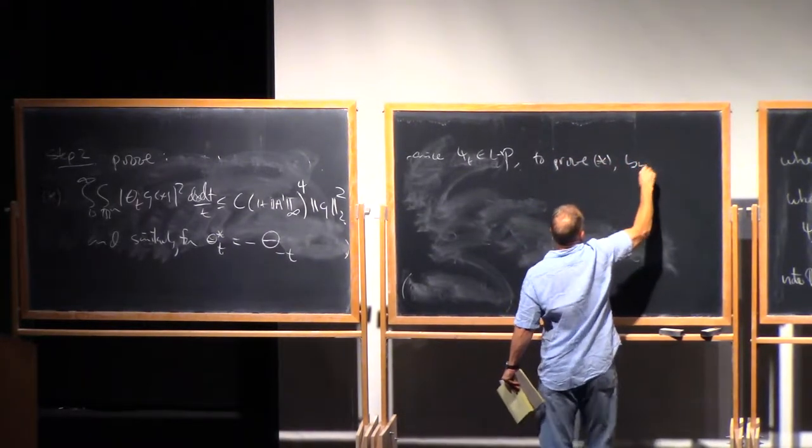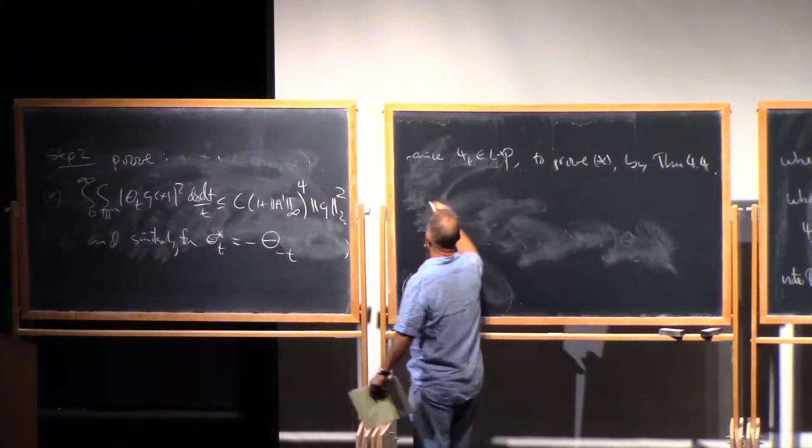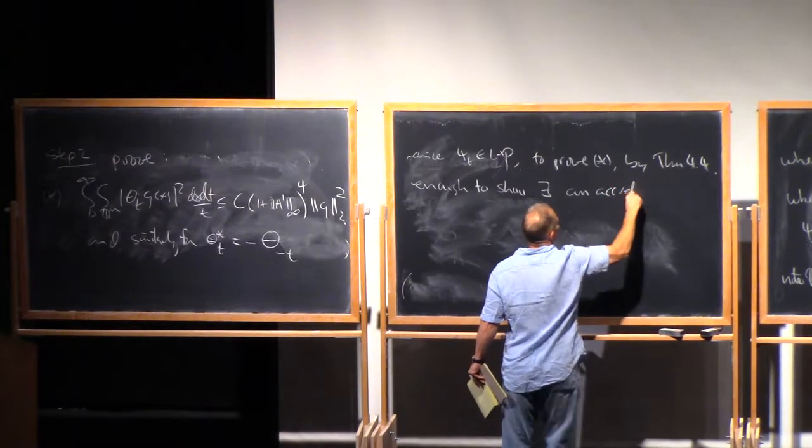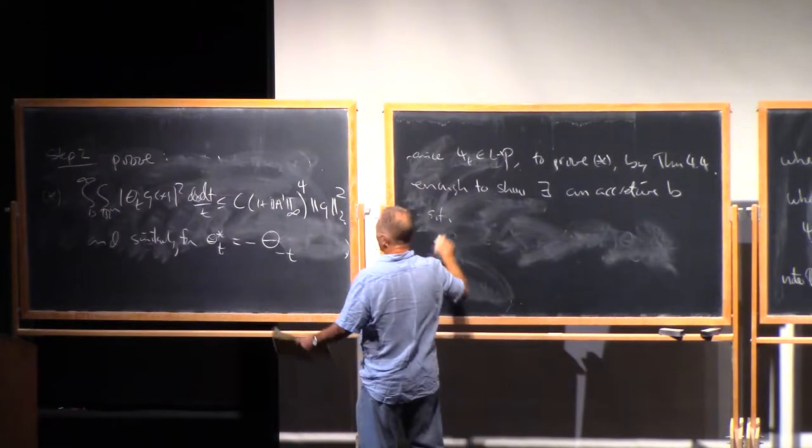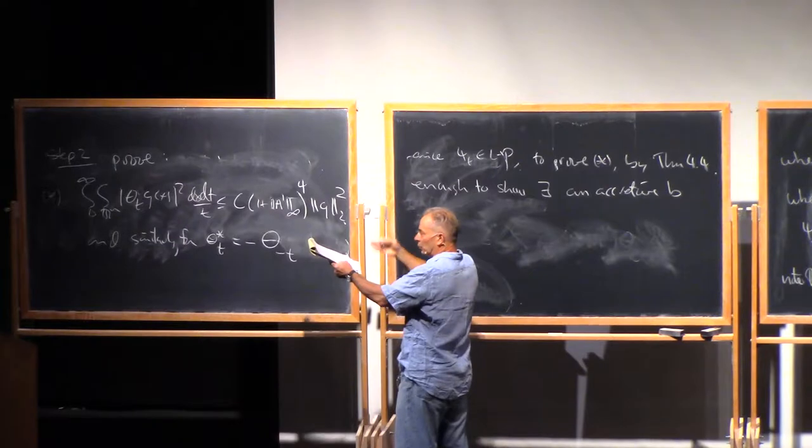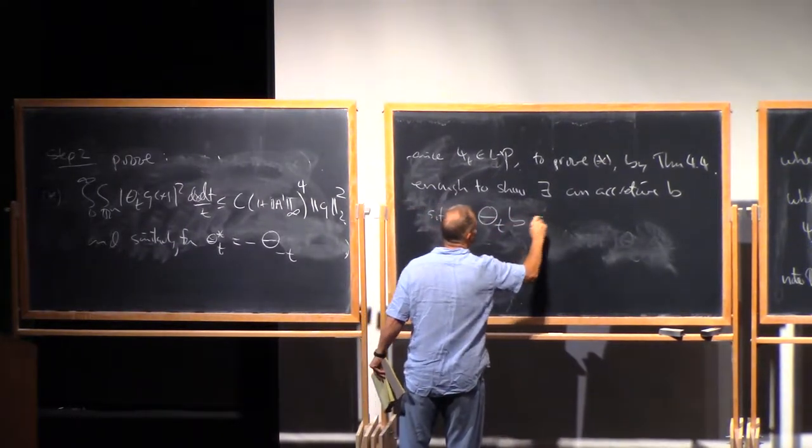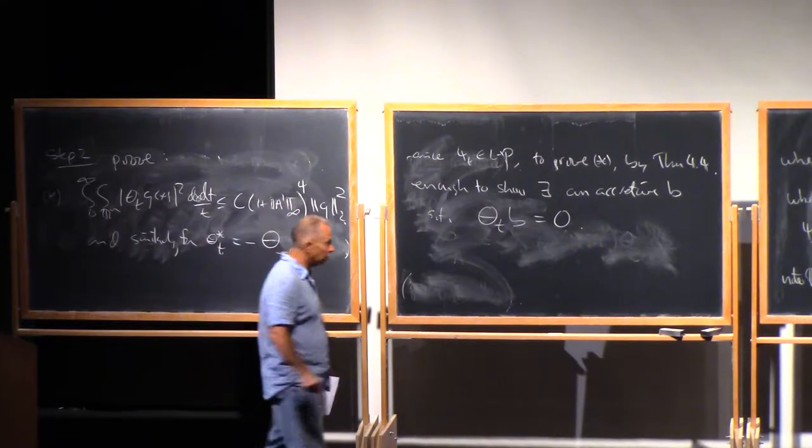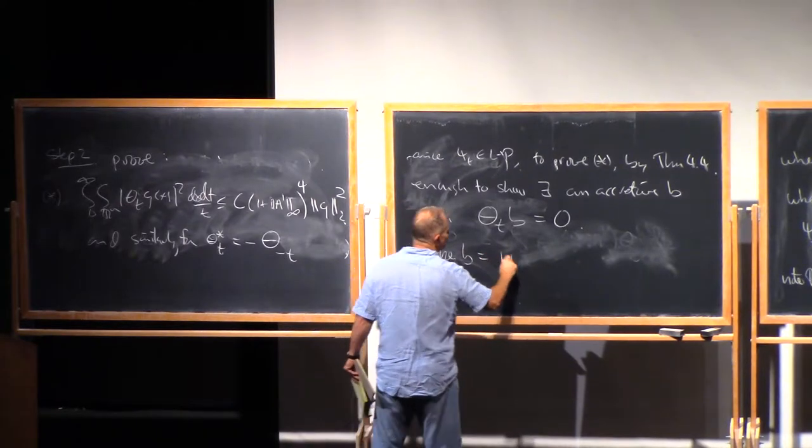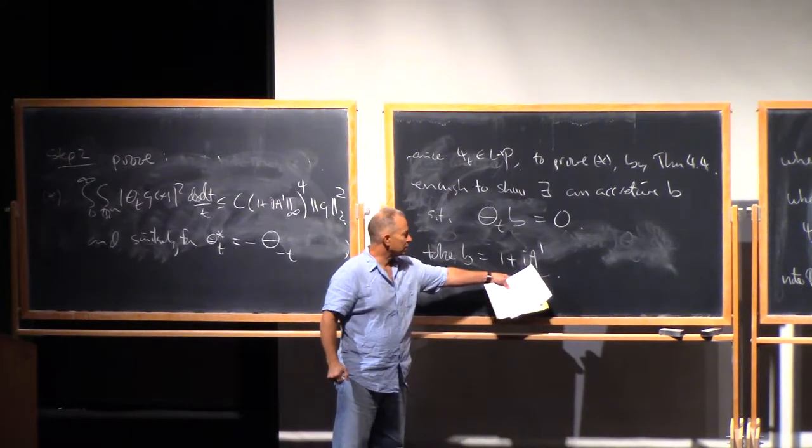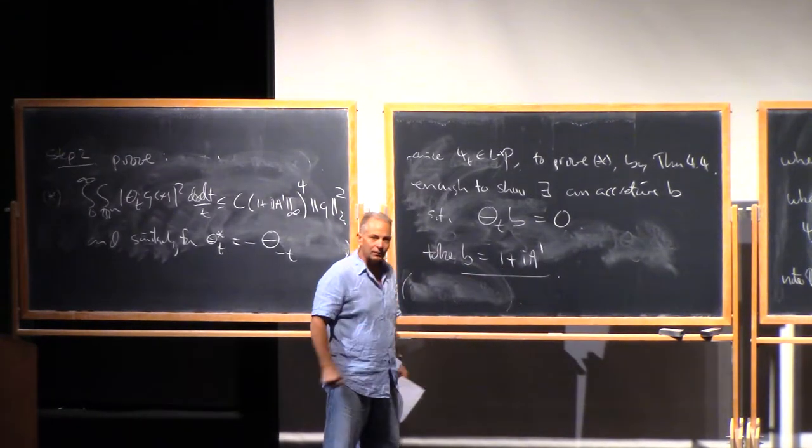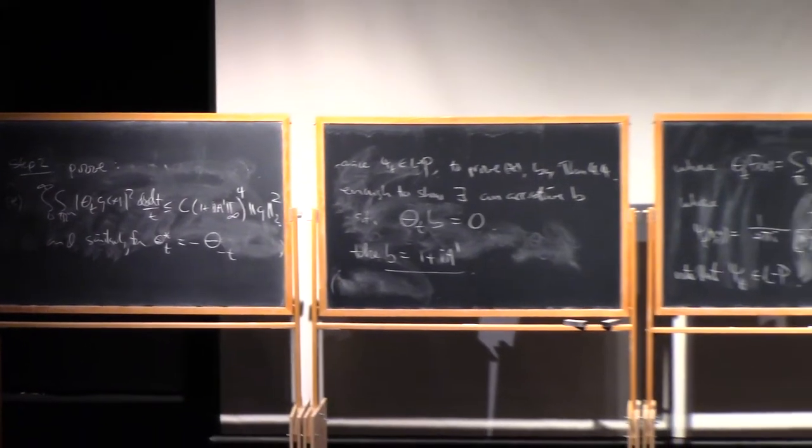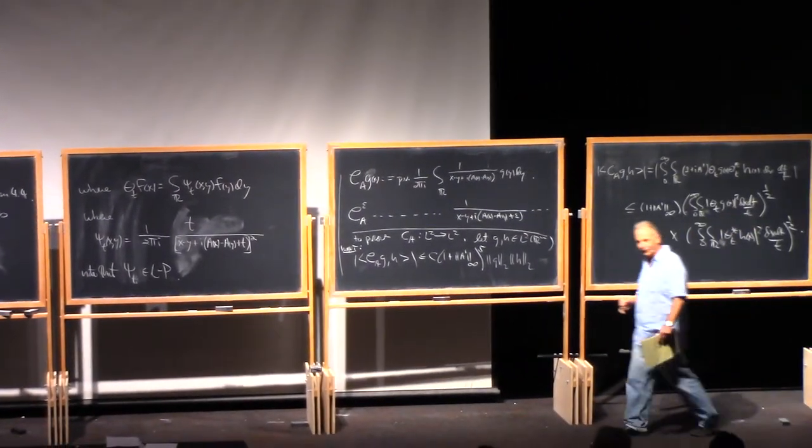To prove this by theorem 4.4, which is this T of B theorem for square functions, it's enough to show there exists an accretive B such that theta T of B is 0. We're going to do even better than just theta T of B giving rise to a Carleson measure. We're actually going to have theta T of B equals 0. So it's a very particular case of this T of B theorem. And what's the B that we use? We're going to take B to be 1 plus iA prime.